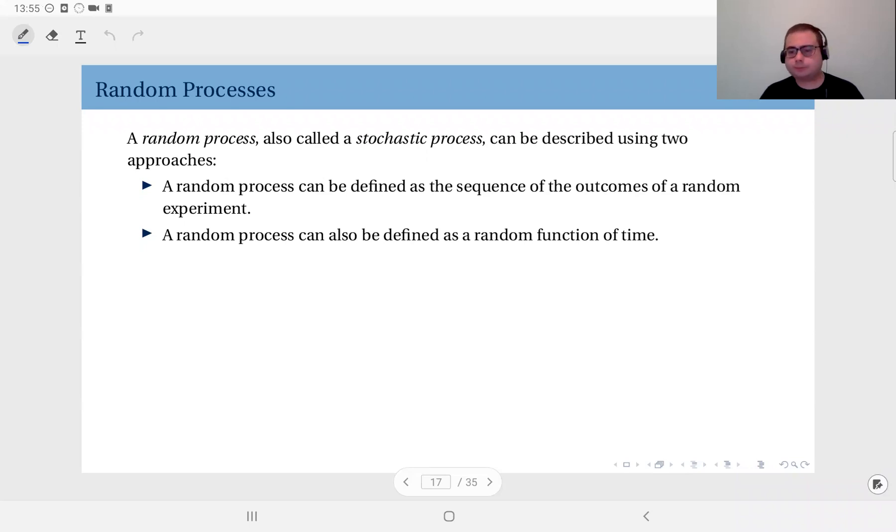Or maybe you observe some quantity which has random properties across time. For instance, the number of people at a bus stop throughout time. When you just look at it in one instant, that's a random variable, the number of people there, it's a random variable, depends on the behavior of people. But if you look at it continuously, what you observe is a random process. That's one approach to define a random process.